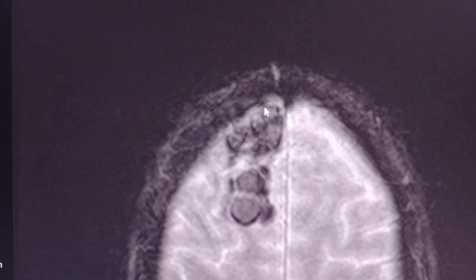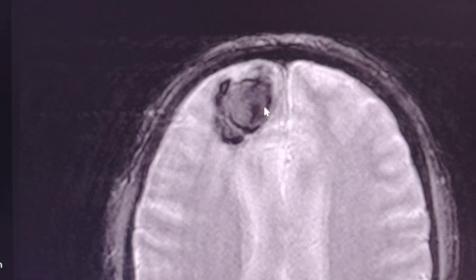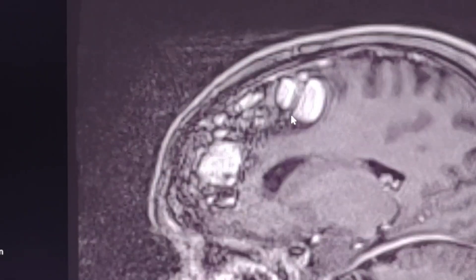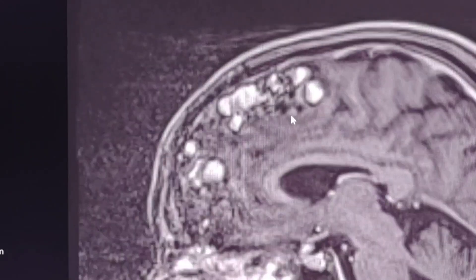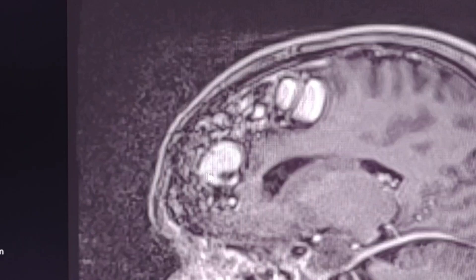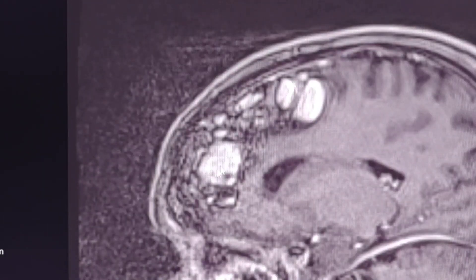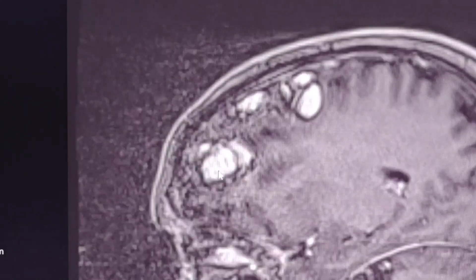As you can see, the fat shows suppression on that sequence. Finally, this is the T1 post-contrast, post-gadolinium sequence. We can see again the lobulated, multiloculated appearance of the lesion with no evidence of any significant peripheral enhancement, and the fat tissue remains of high signal intensity.